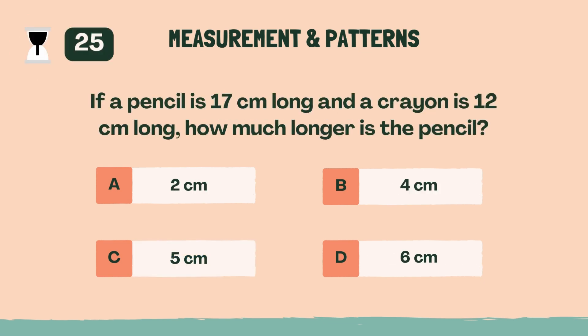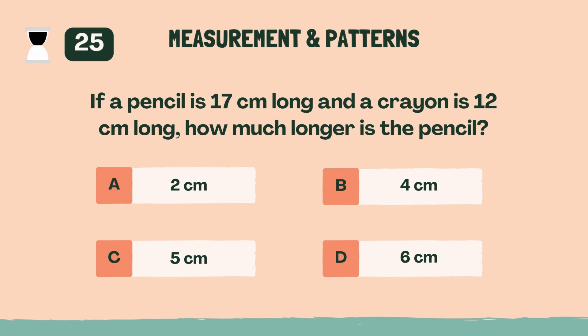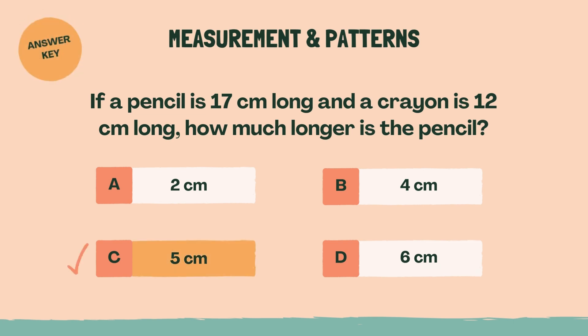If a pencil is 17 centimeters long and a crayon is 12 centimeters long, how much longer is the pencil? The answer is C, 5 centimeters.